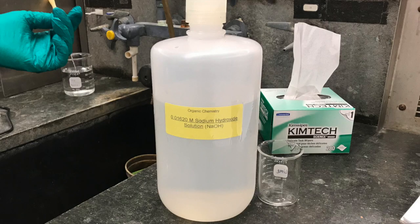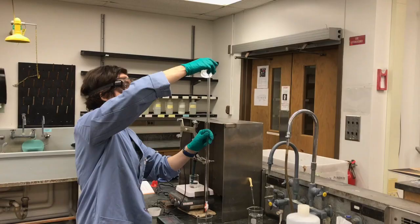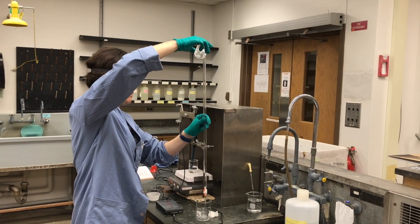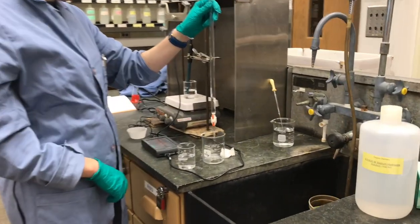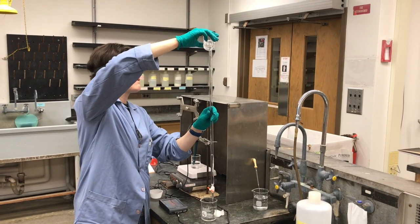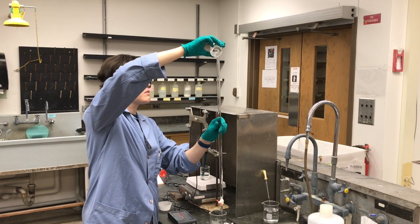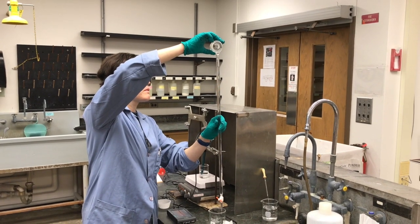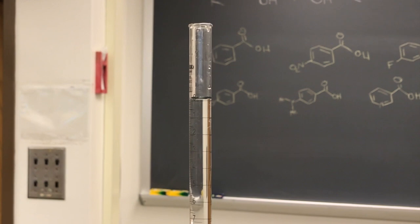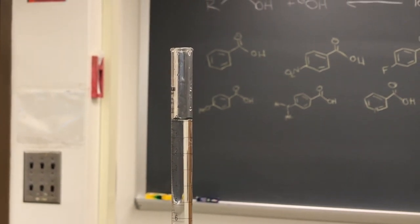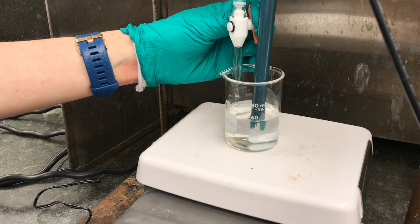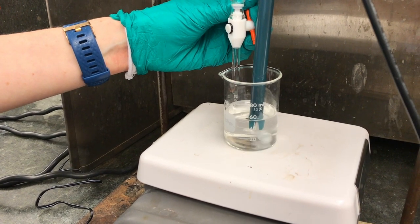Now we're going to set up the titration, but before that it's important to note the actual concentration of the sodium hydroxide solution that we'll be using. You get your burette and the first thing you do is add a little bit of the sodium hydroxide solution — just enough to wash it down. After you've drained that first solution, now you want to fill it all the way up to the top. We want to get as close to that zero mark as possible so that it'll make all our calculations simple. This is the setup: get the pH probe all the way inside the solution, then clamp the burette so that we can easily dispense the sodium hydroxide. We'll start out by adding half a mL at a time.